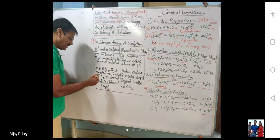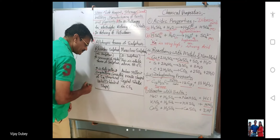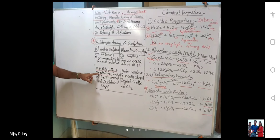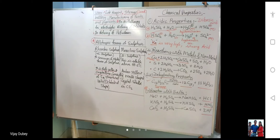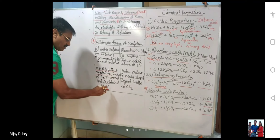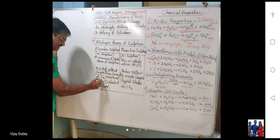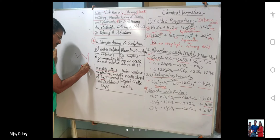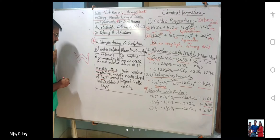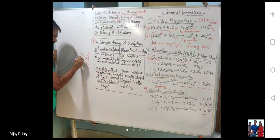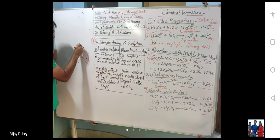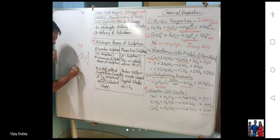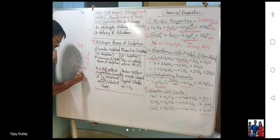Rhombic sulfur is a pale yellow crystalline solid, consisting of S8 structural units packed in an octahedral shape. This puckered ring structure of S8 is characteristic of rhombic sulfur.